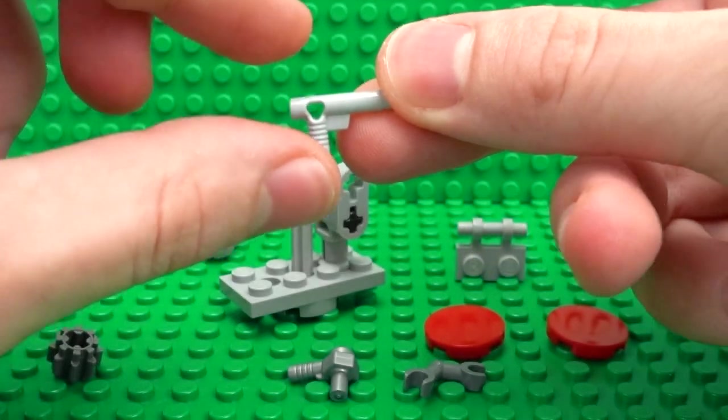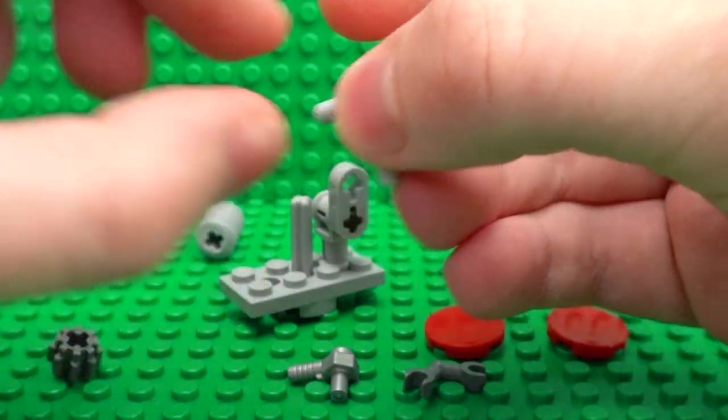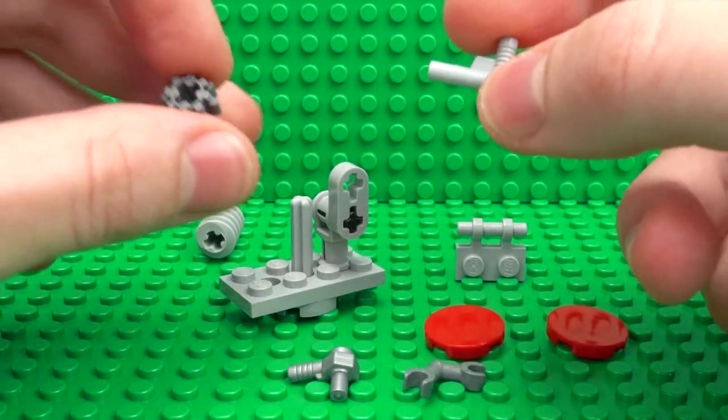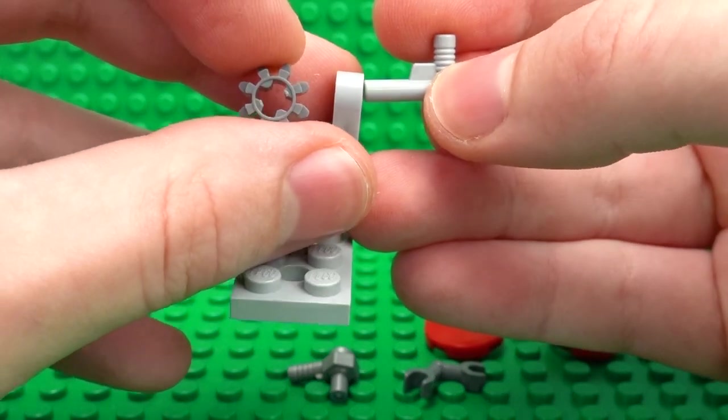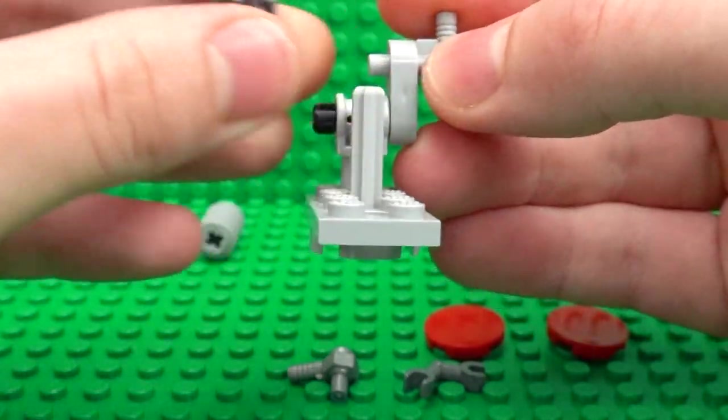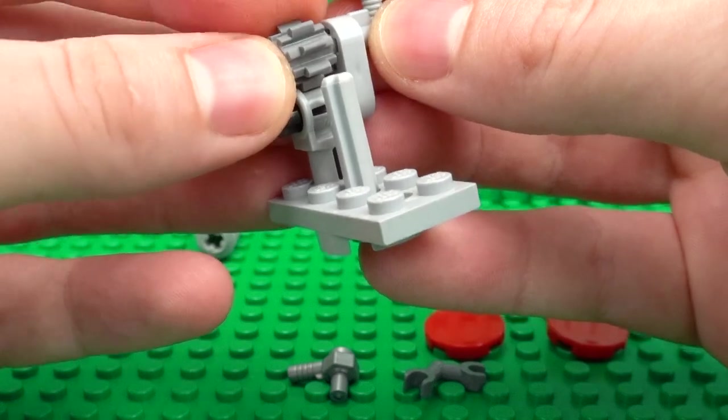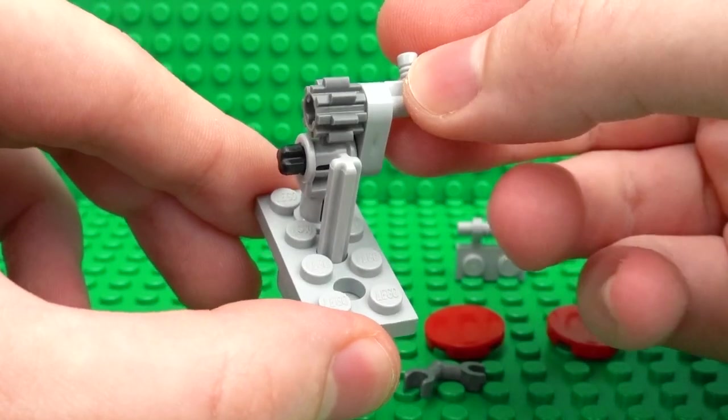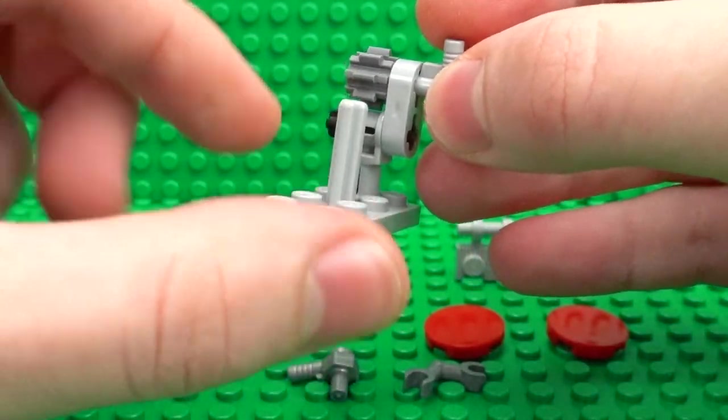And next you can take one of these gun or hose pieces and a 1x1 technic gear and connect that by sliding the hose or gun piece through there and the gear on the outside.